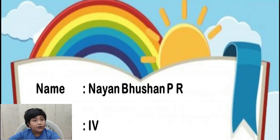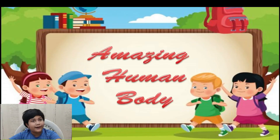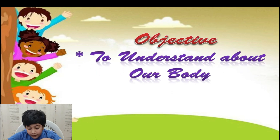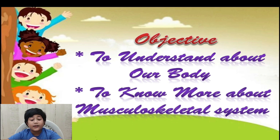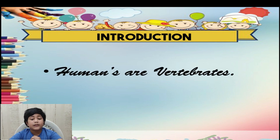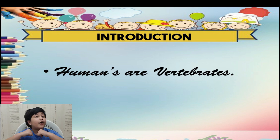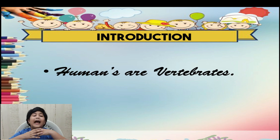Today we are going to learn about our body — that is the amazing human body. The objectives of today's presentation are to understand about our body and to know more about the musculoskeletal system. We humans are called vertebrates because of our backbone. The animals which have a backbone are called vertebrates — for example, cat, dog, fish, birds, and we.